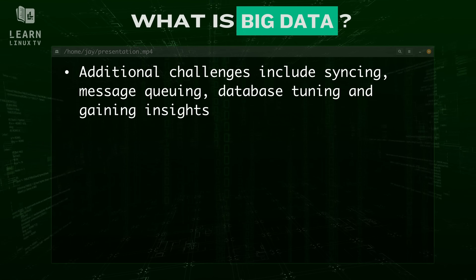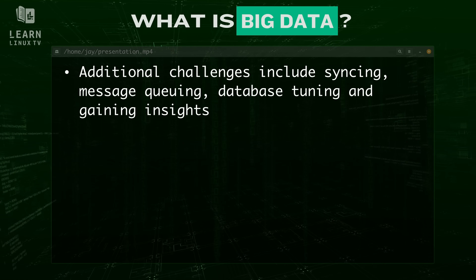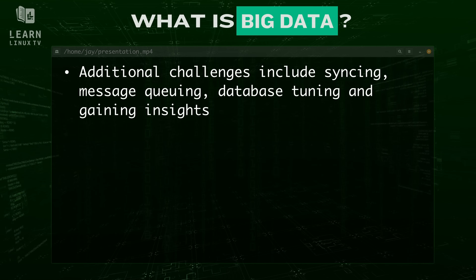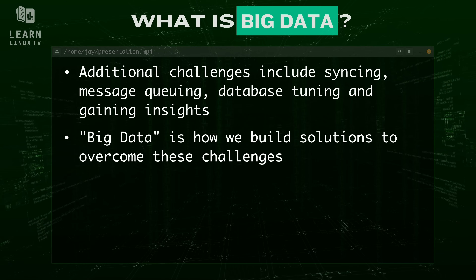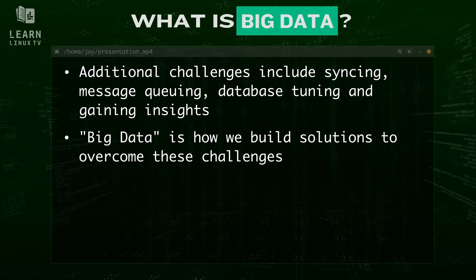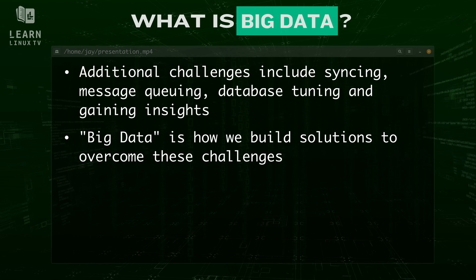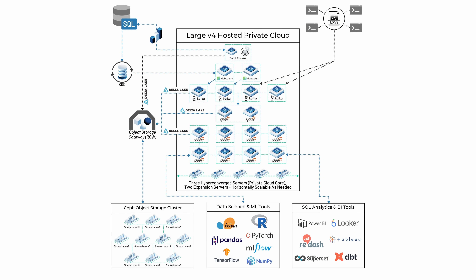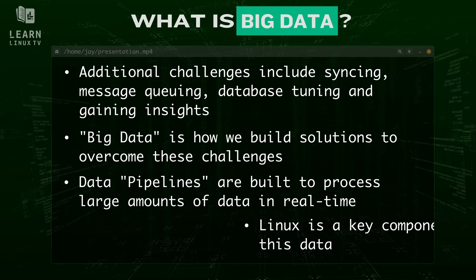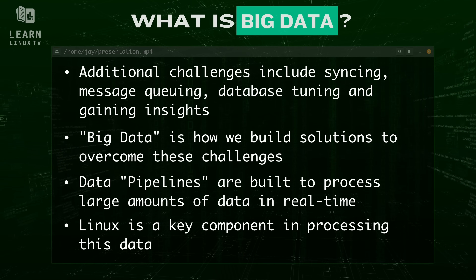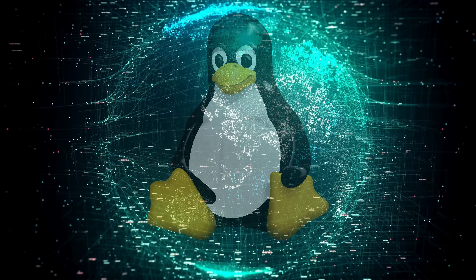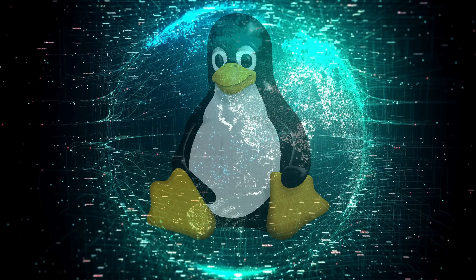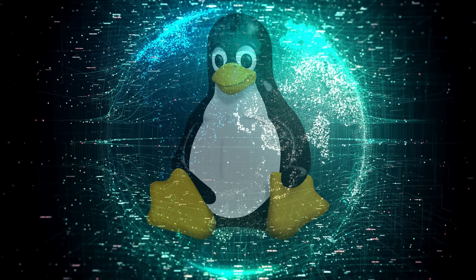Basically, big data translates to a large quantity of information. But the concept is more than just a term to describe a large flood of ones and zeros — it also involves building a solution that's able to process everything. This involves a specific set of instructions and a combination of services, called a pipeline, that keeps everything running smoothly. The pipelines we create within big data consist of best practices and associated tools that give us the ability to handle an immense amount of data automatically. And like I mentioned, Linux is a major player in this space.